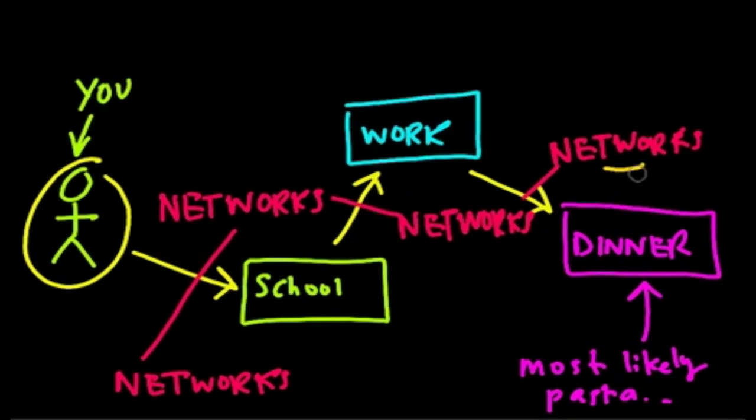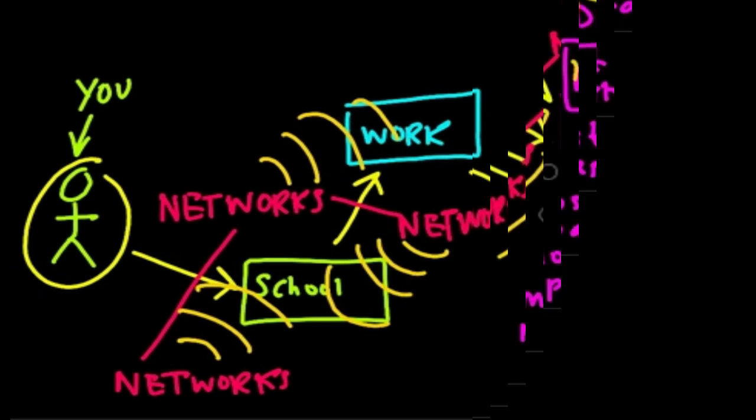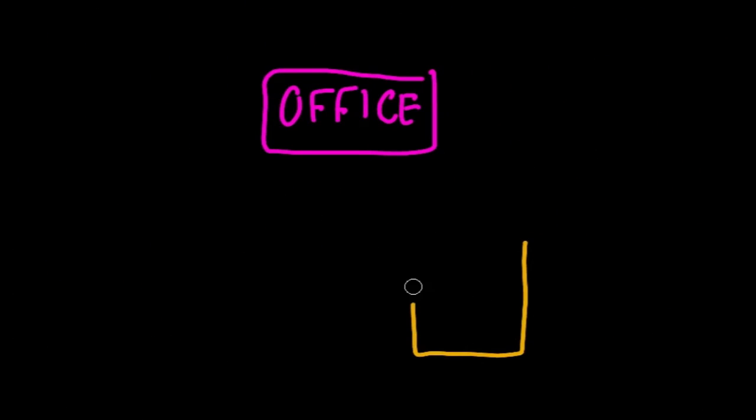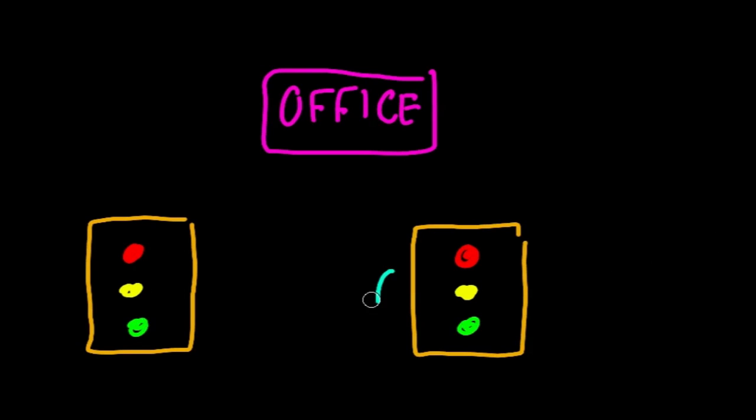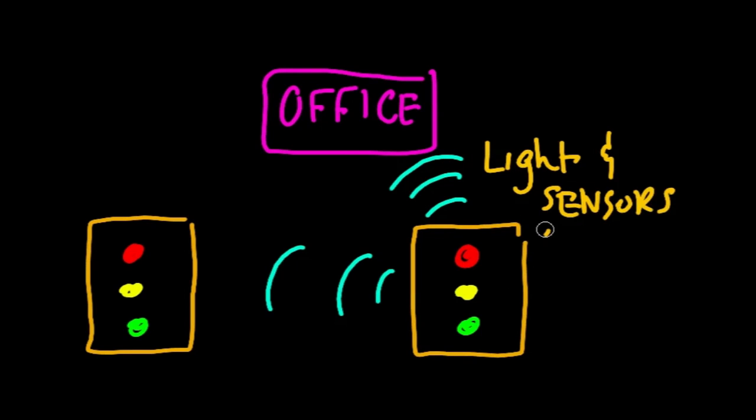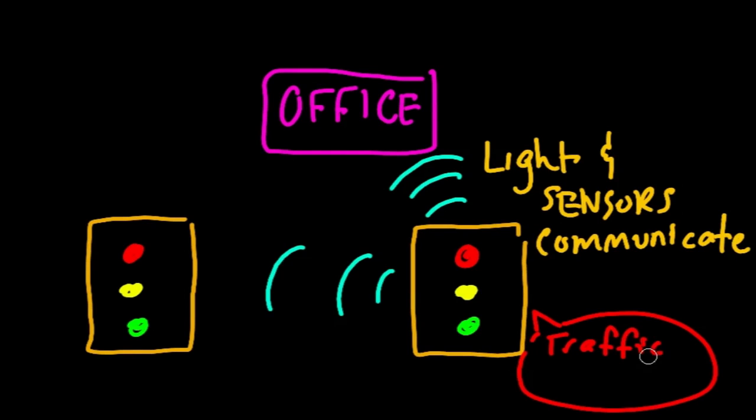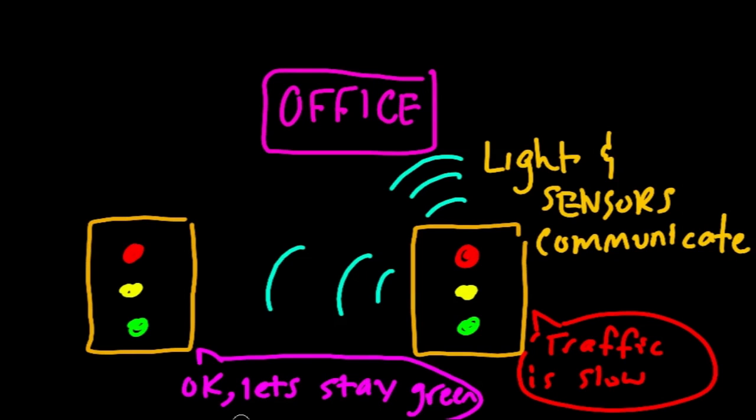They just recently redid all the traffic lights. And while they were installing it, I got a chance to talk to the people installing it, and they told me that every single light is connected via a wireless network to each other. All the lights connect to each other, and they connect to the main office, and these lights can talk to each other. And in addition to car sensors in the road, they can determine where there are cars, and they can change their timing to move people through the intersections faster or slower, depending on all sorts of different variables.